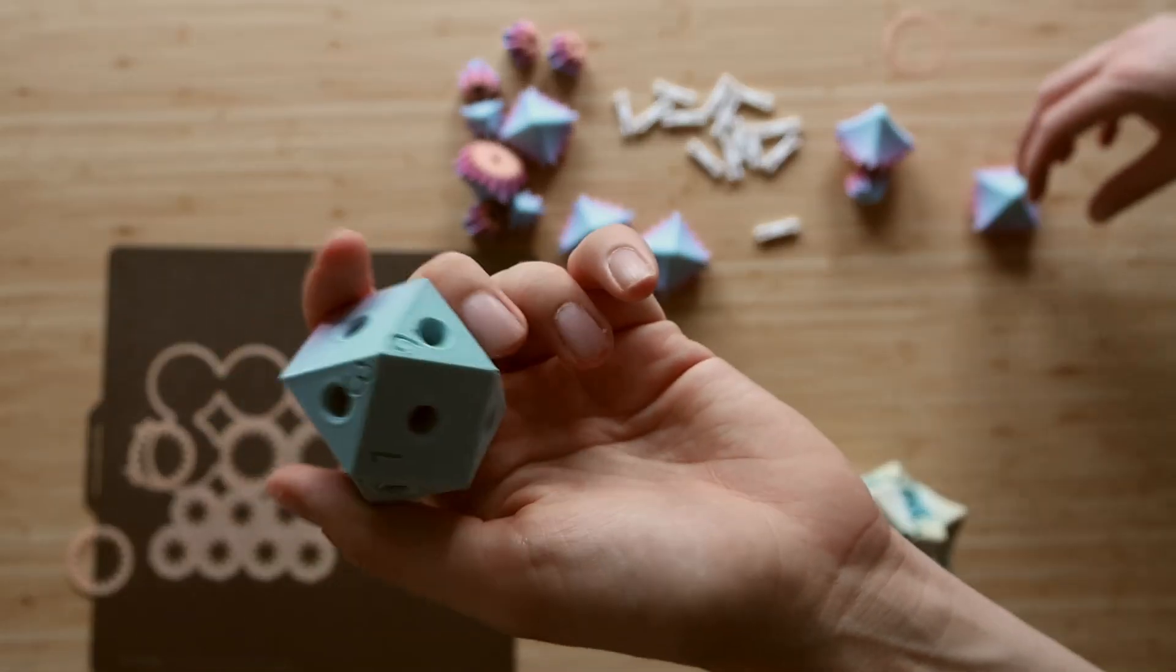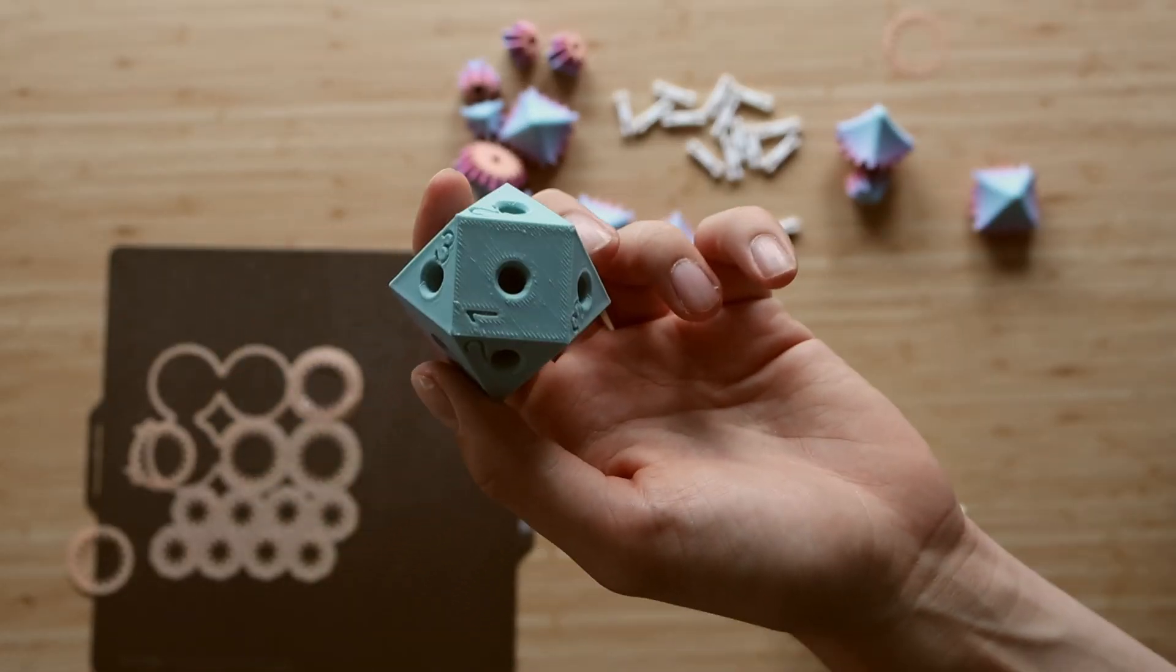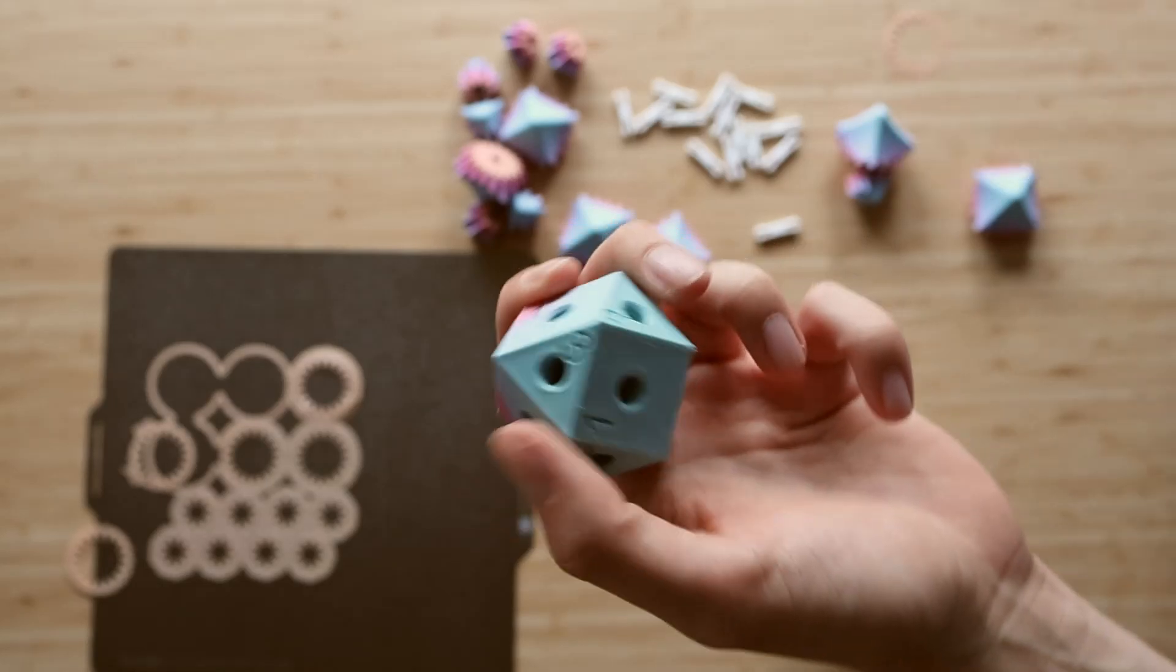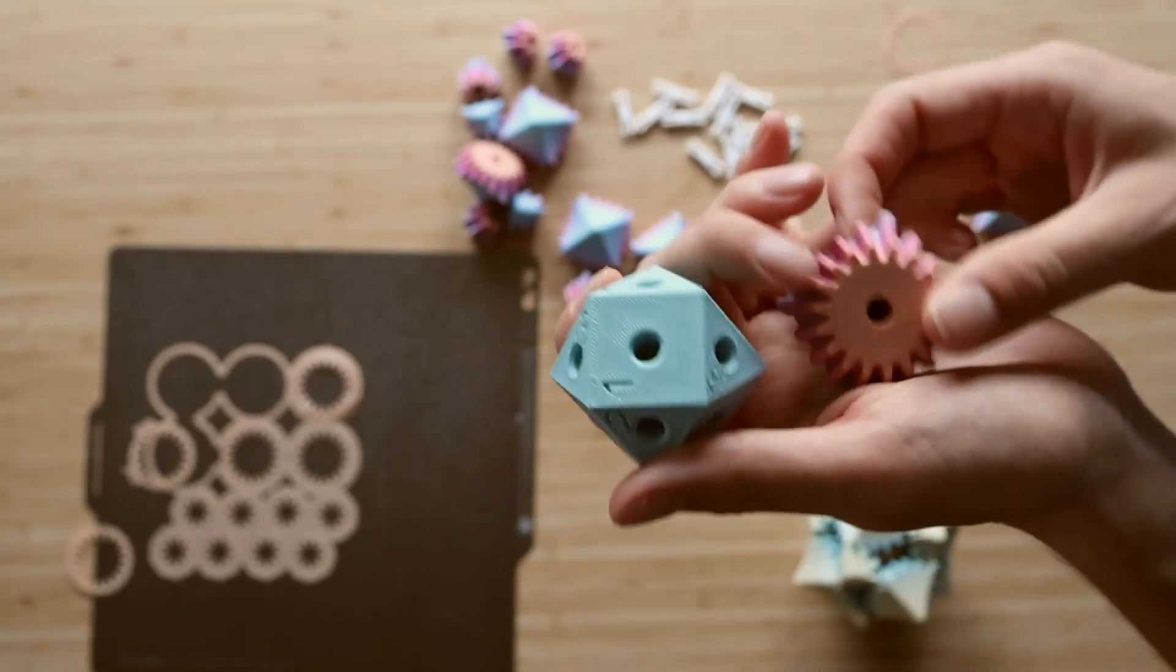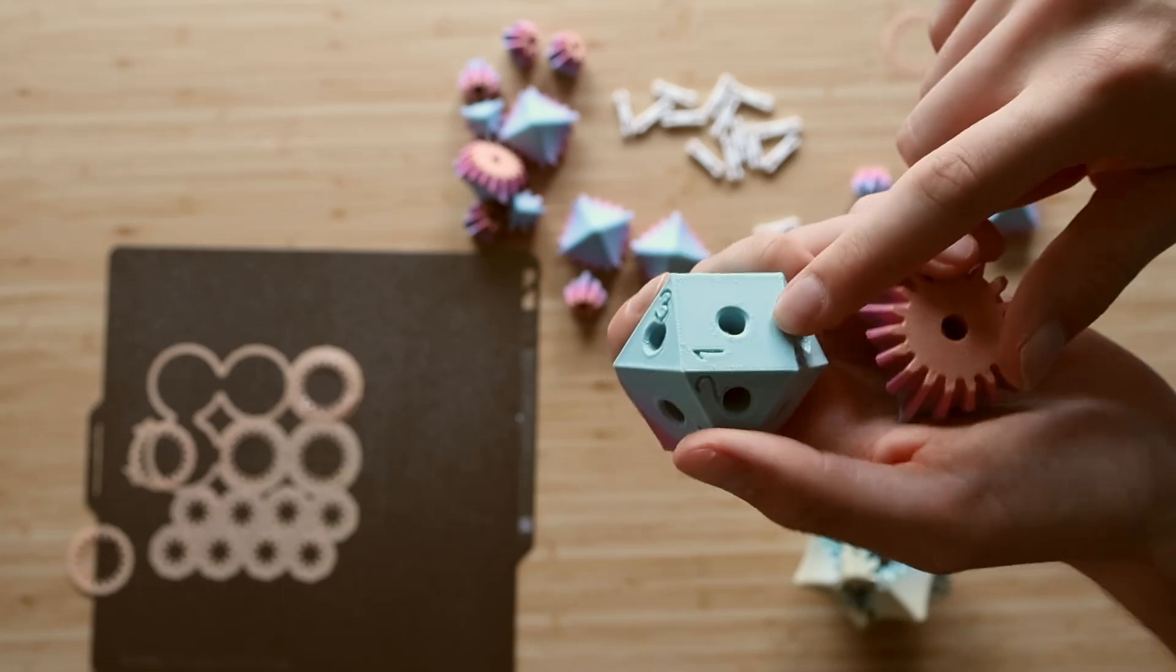Okay, so we have our heart right here and as you can see, it's numbered. The big gears are going to be placed on every side that has a number one.